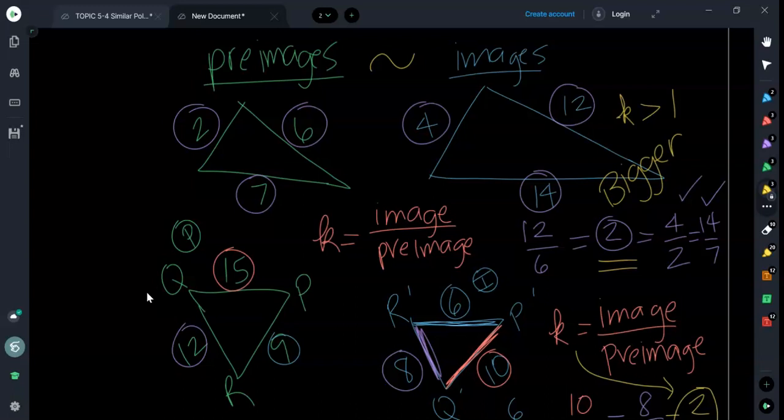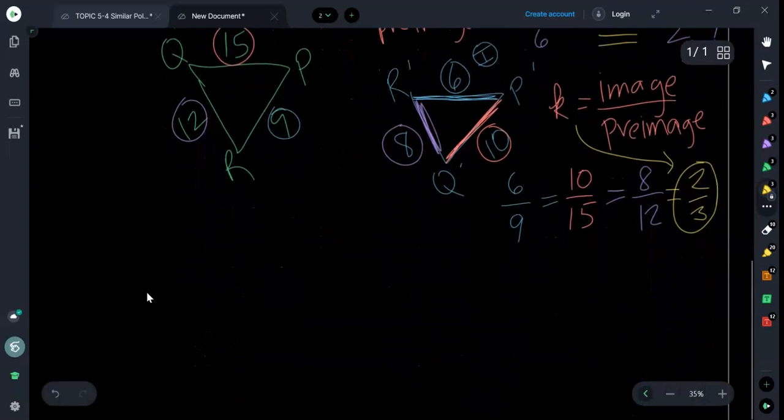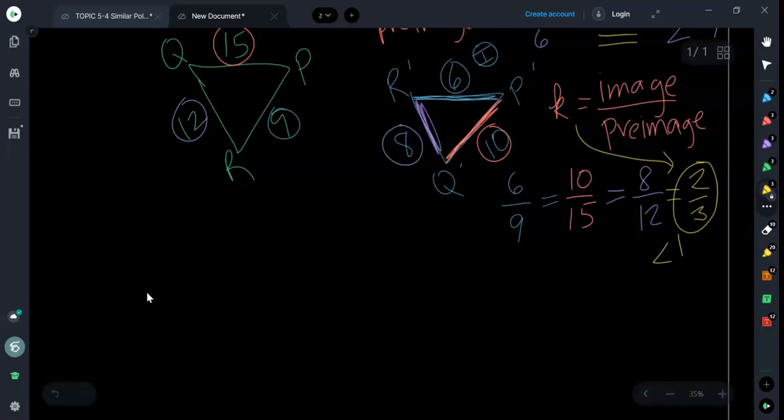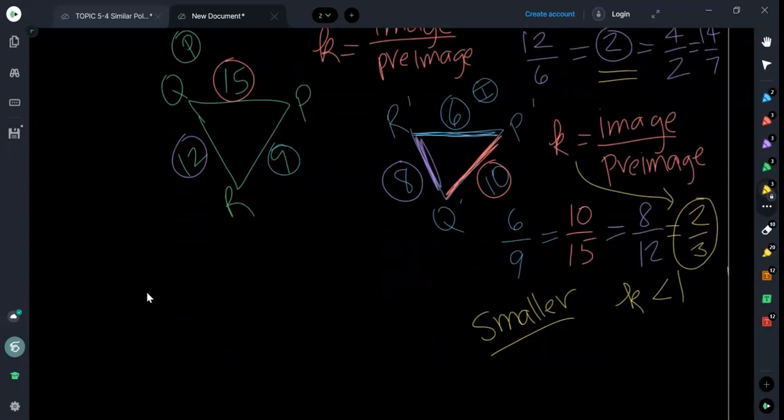Down here, the scale factor is less than one. K is less than one because the image got smaller. We got smaller. If I want something to get smaller, I'm going to multiply it by something less than one: one-half, one-third, two-thirds. So that's how we determine whether our scale factor is going to be bigger than one or smaller than one. I know this is a lot, but this is just the nature of doing similarity. You have to understand these proportions. Notice that all of these reduce to the same thing.